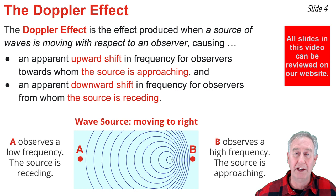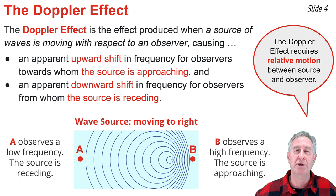The Doppler effect assumes that there's relative motion between an observer and the source of waves. That means that the source of waves could be moving, or the observer could be moving, or both source and observer could be moving but with a different velocity.